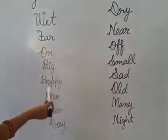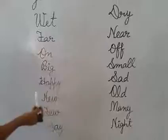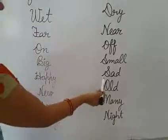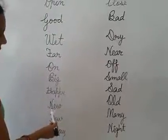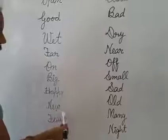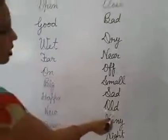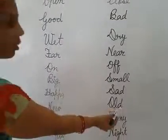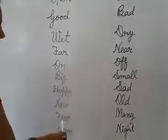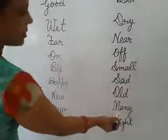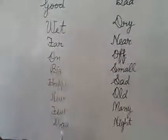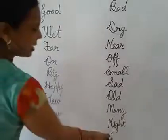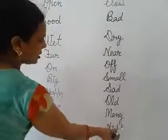H-A-P-P-Y. Happy. S-A-D. Sad. Okay children, next. Look at the word: N-E-W. New. O-L-D. Old. F-E-W. Few. M-A-N-Y. Many. D-A-Y. Day. N-I-G-H-T. Night.